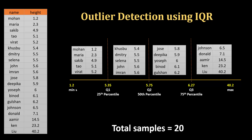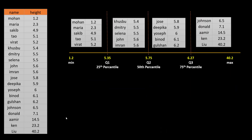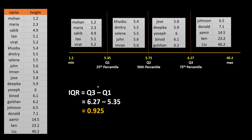So that's a quick summary of percentile. Once you know percentile, you can easily calculate IQR by subtracting Q1 from Q3. Here Q3, which is the 75th percentile, is 6.27, minus Q1 of 5.35 — giving an IQR of 0.925.